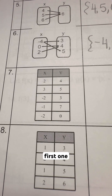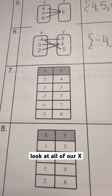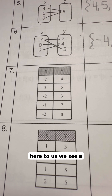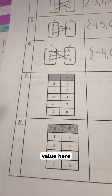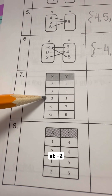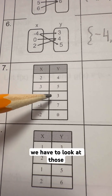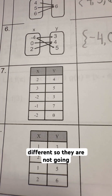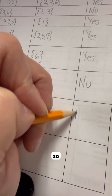Let's start with this first one. We look at all of our x values — that's the only thing that matters here. We see a repeating x value at negative 2, and another repeating one at negative 2. We have to look at those y's. They are different, so that is not a function. So no.